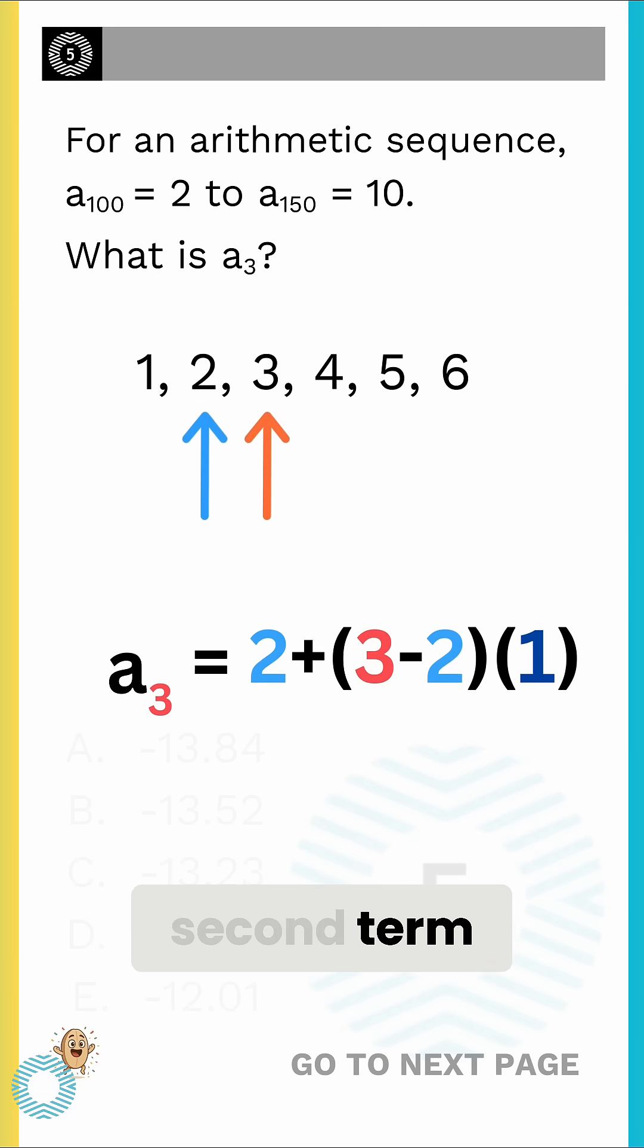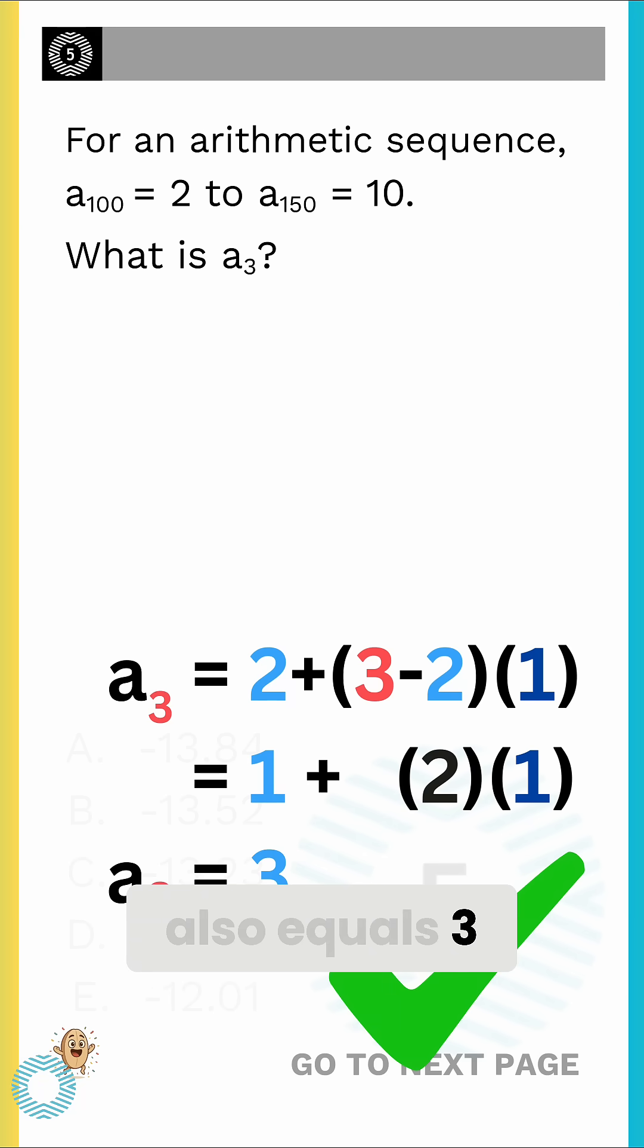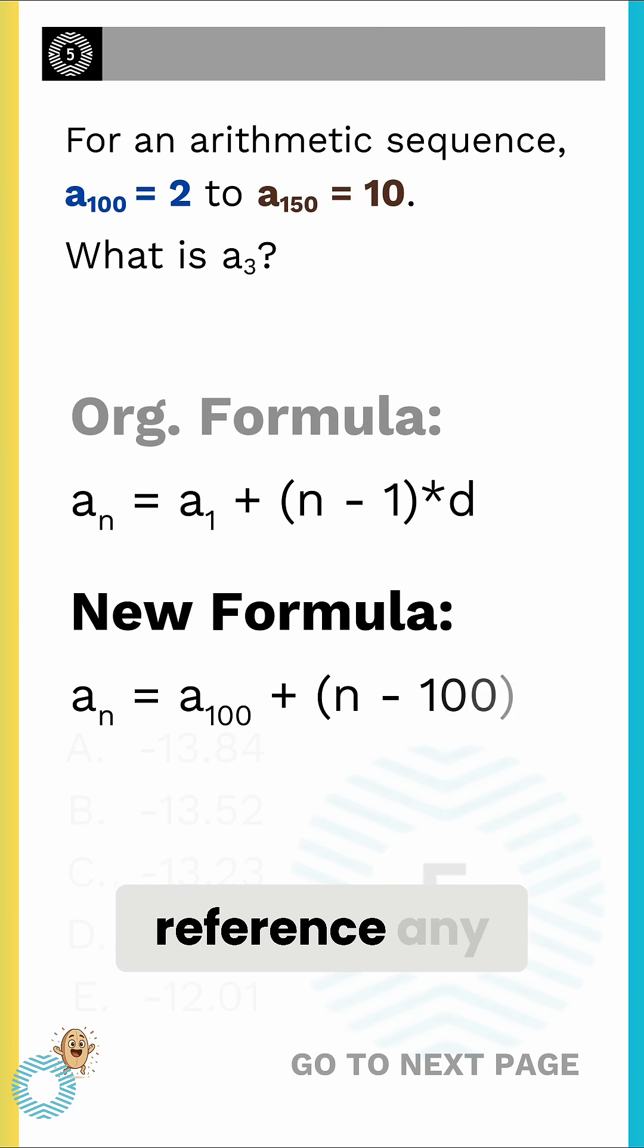But notice we can also use the second term, which is 2. The second term plus 1 times the difference, which is 2 plus 1 times 1, also equals 3. This works because arithmetic sequences have a constant difference, making it valid to reference any known term.